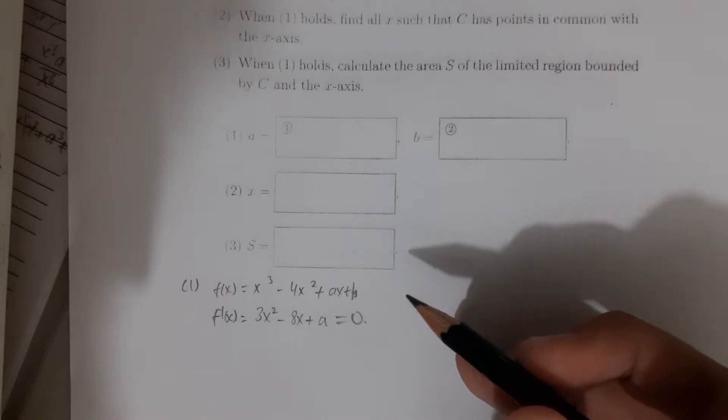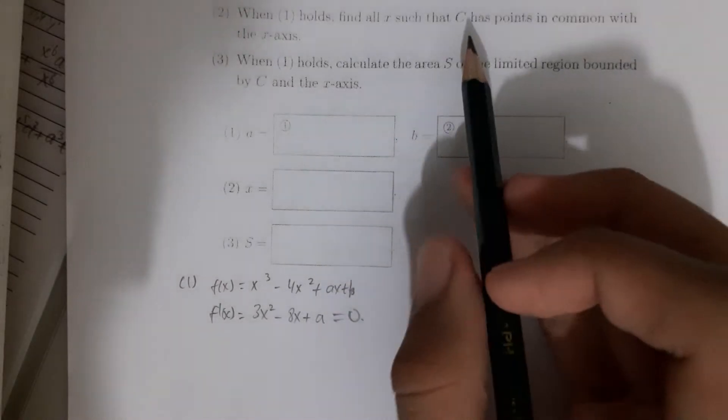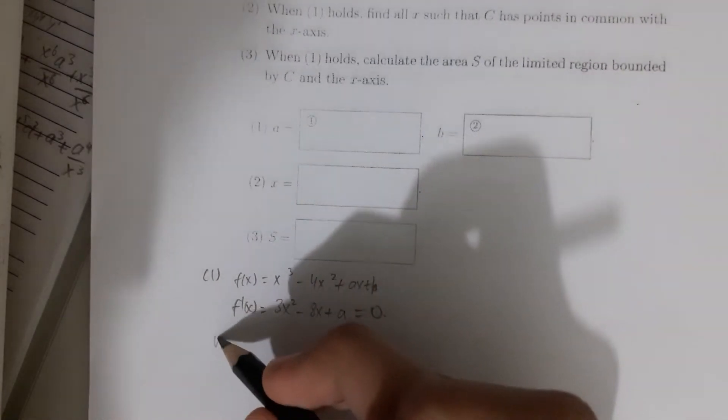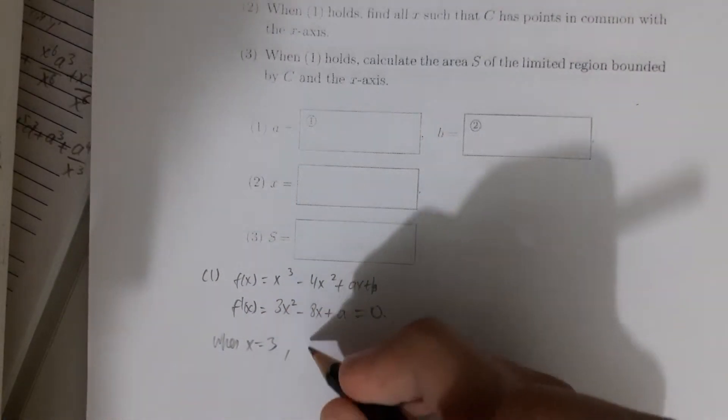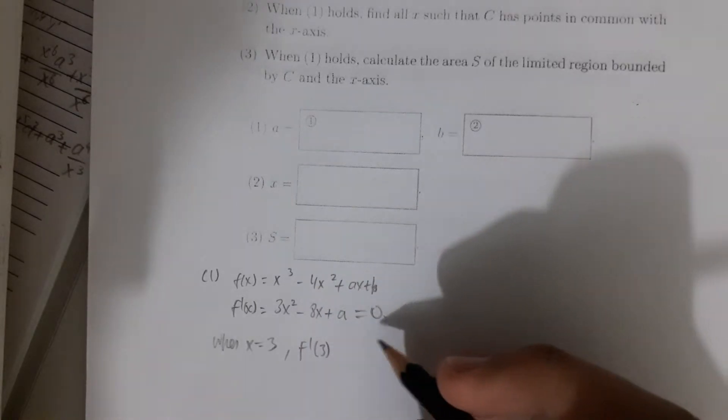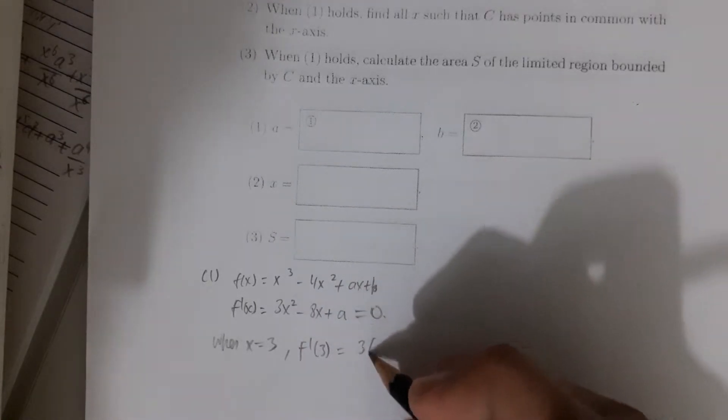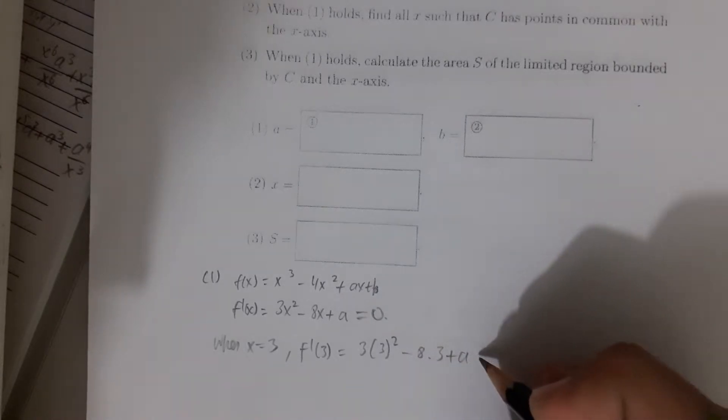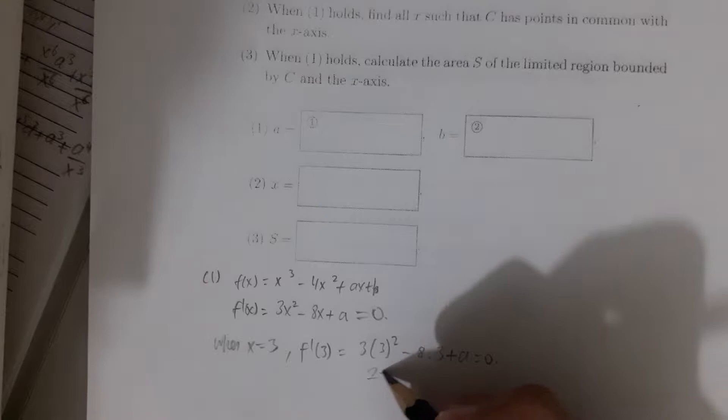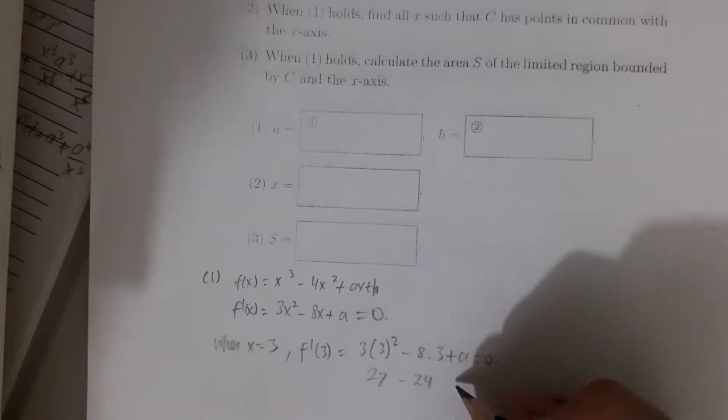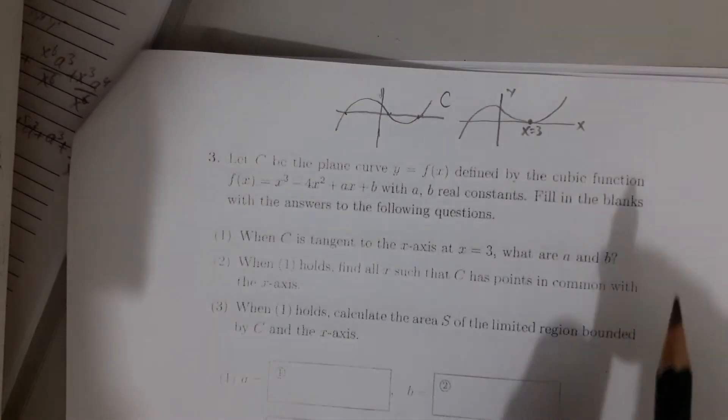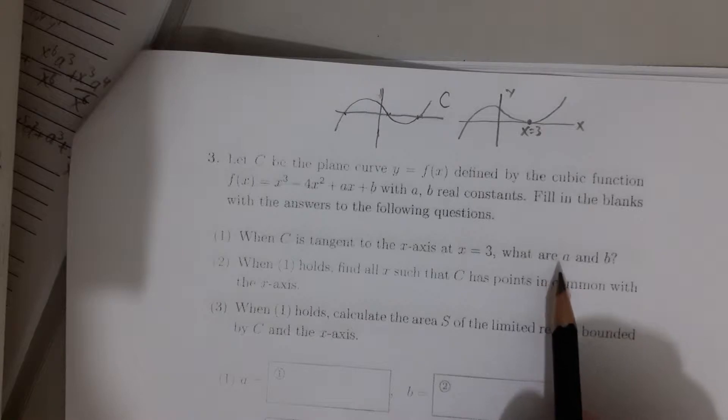And then we try to put x equals 3 to this differentiation. So when x equals 3, then f'(3) is equal to 3(3²) minus 8 times 3 plus a equals 0. So it is 27 minus 24 plus a equals 0. So a equals minus 3. Now we get the first requirement, which is a.